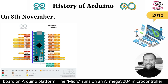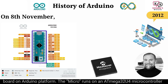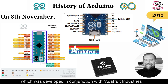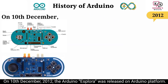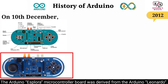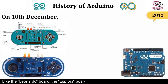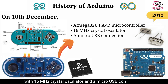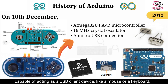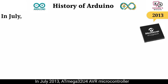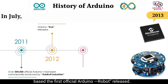On November 2012, Massimo Banzi released the new Arduino Micro board. The Micro runs on an ATmega32U4 microcontroller with native USB communication and was developed in conjunction with Adafruit Industries. On 10 December 2012, the Arduino Esplora was released. The Esplora microcontroller board was derived from the Arduino Leonardo and uses an ATmega32U4 AVR microcontroller with a 16 MHz crystal oscillator and a micro USB connection, capable of acting as a USB client device like a mouse or keyboard.